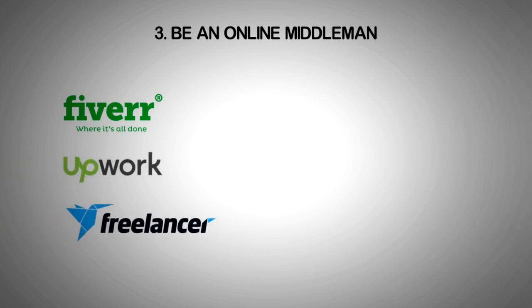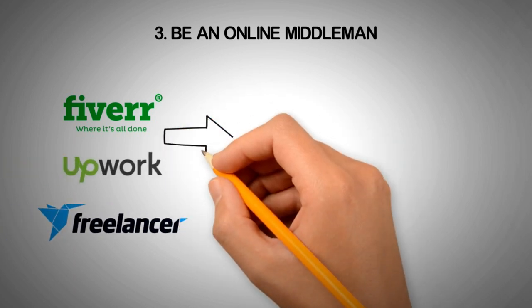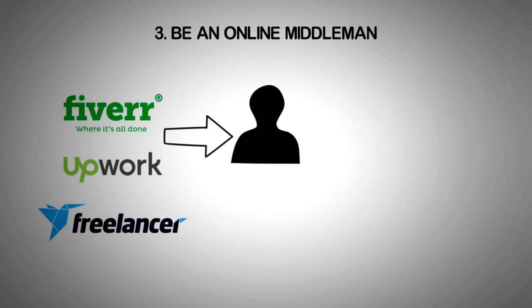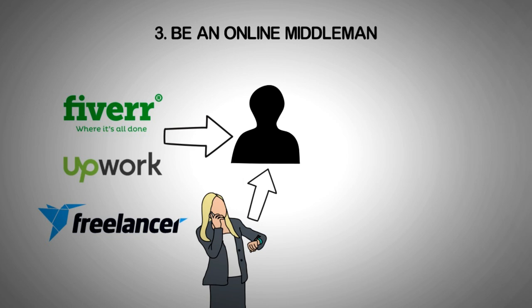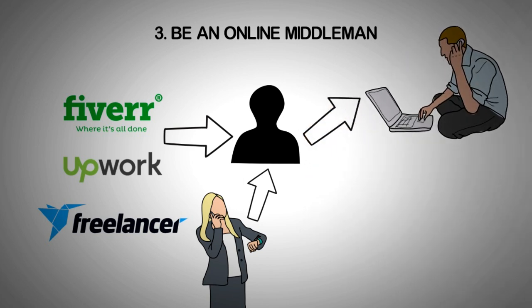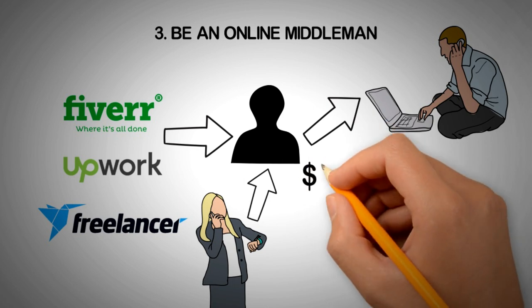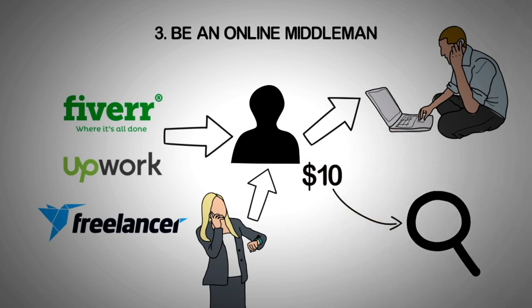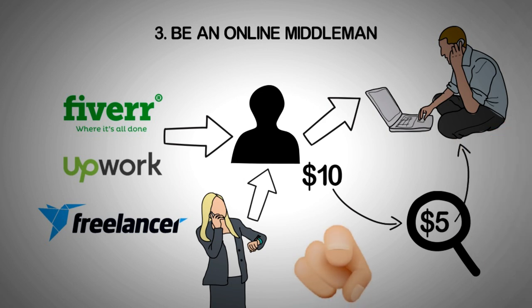The third method: be an online middleman. Go to freelancing websites like Fiverr.com, Upwork, or Freelancer.com, create a profile, and list the services you want to sell. Whenever you receive an order from a client, outsource that task to other freelancers on the same platform. For example, list your service for $10, find freelancers offering the same service for $5, pay them to do the task, and keep the difference. This is a nearly passive income source.